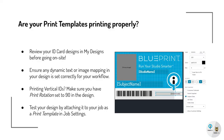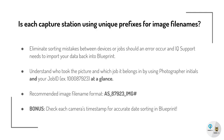You'll want to ensure that any dynamic text or image mapping in your design is set correctly for your workflow. You can test your design by attaching it to your job as a print template in job settings. This can help eliminate any sorting mistakes between devices or jobs should an error occur.